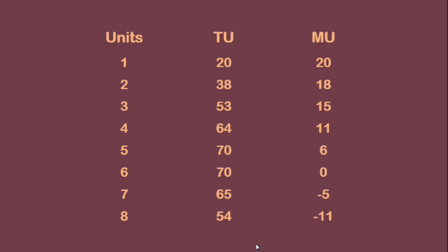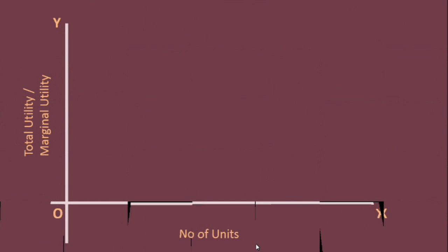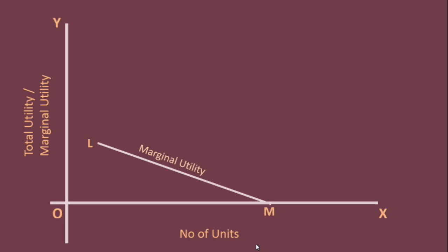Refer the table. Up to the fifth unit of apple, marginal utility is positive. Total utility goes on increasing as 20 units, 38 units, 53 units, 64 units, and 70 units. Look at the graph: marginal utility is positive in the segment L-M of the marginal utility curve, and total utility is increasing in the segment L-K of the total utility curve.